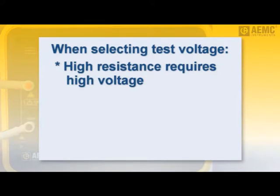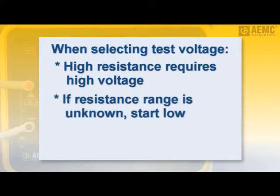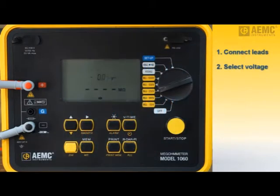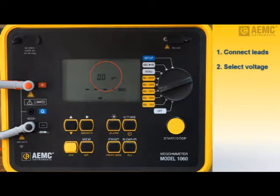In general, the higher the resistance to be measured, the higher the test voltage. In cases where the resistance is unknown, it's good practice to start with the lowest voltage and gradually increase until the measurement results are consistent. As another rule of thumb, we recommend testing at twice the system voltage, as long as the system voltage does not exceed 1000 volts. In our example, we will start with the 250-volt setting. After a few moments, a voltage reading appears on the screen — this is the external voltage present in the test specimen. As a safety feature, if during testing external voltage exceeds 25 volts, a warning symbol appears and the instrument immediately stops the test.